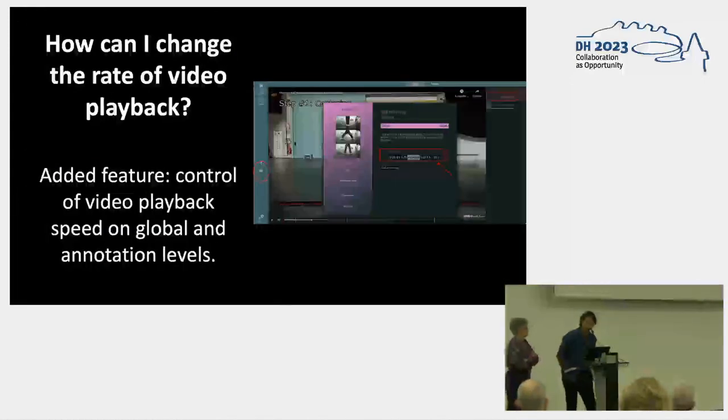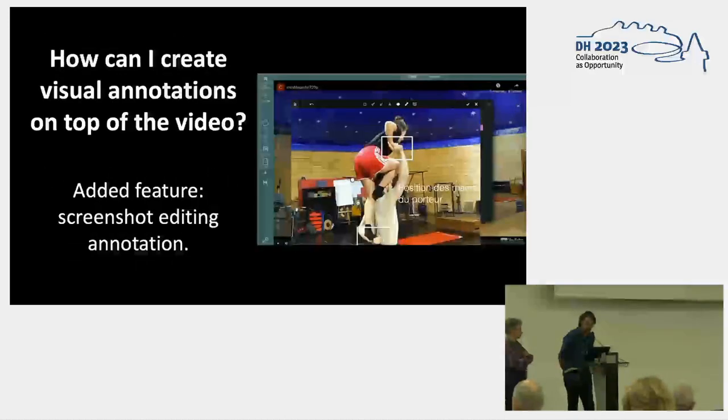In the COSMIC project, one need that emerged for circus professionals was the ability to change the rate of video playback, notably for dissecting complicated gestures and figures. This led us to the implementation of control of video playback speed at a global level and also at an annotation-by-annotation level. Another important need was the ability to create visual annotations on top of the image to point out and highlight specific parts and aspects. We implemented this through annotations that take a key moment from the video, which can then be edited with an array of drawing tools.